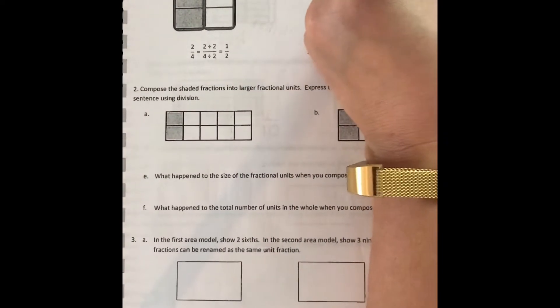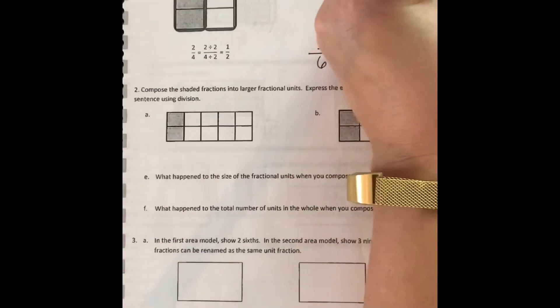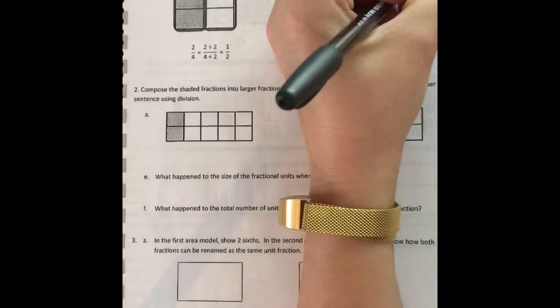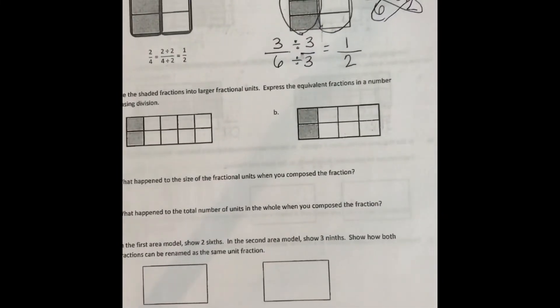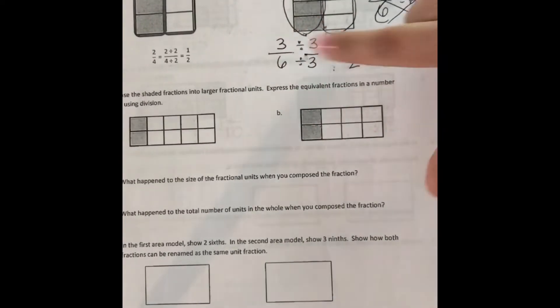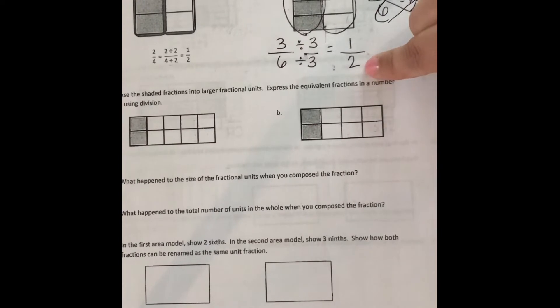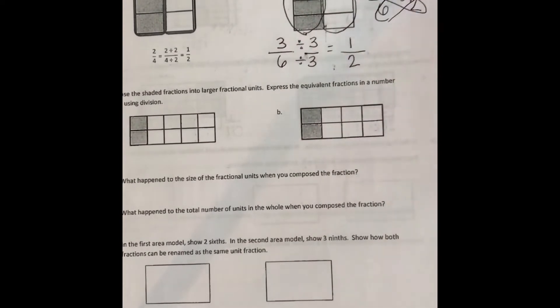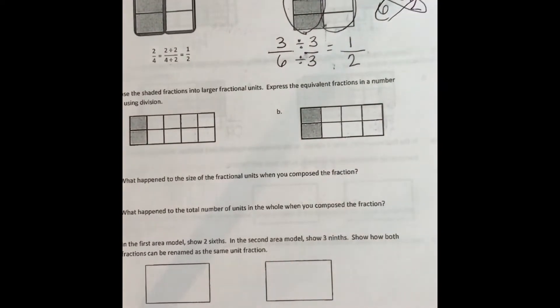And remember friends, we could double check to see if we are correct. And if it still makes sense by cross multiplying. And indeed it does. They both are equal to six. You could also just follow the division equation. Three divided by three is one. Six divided by three is two.